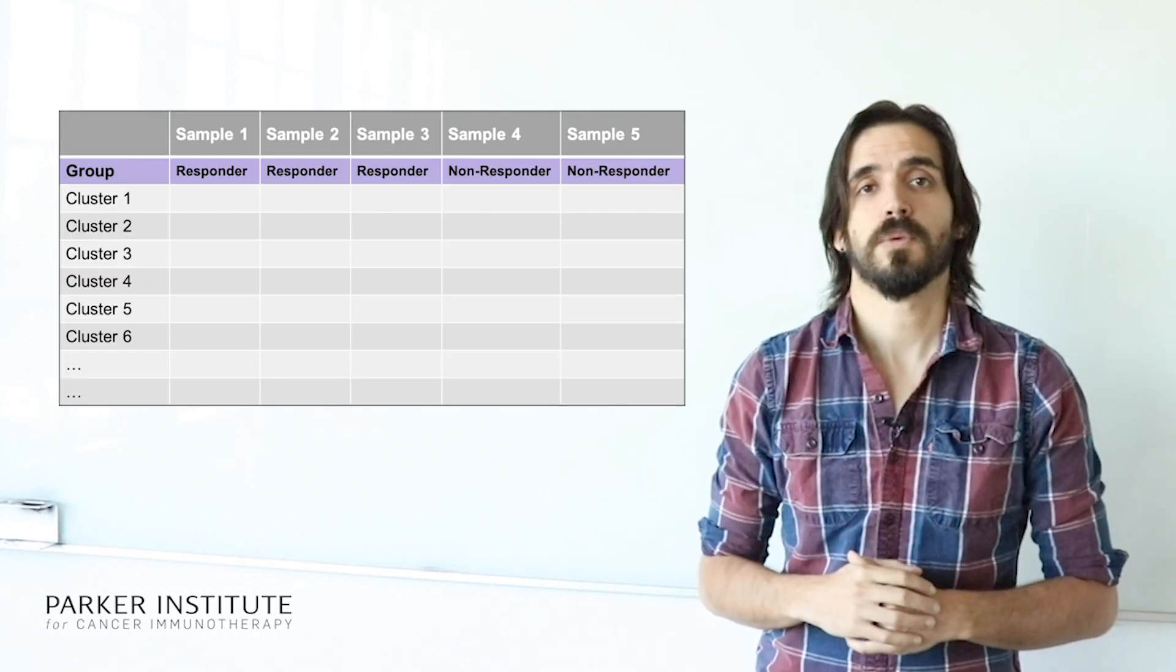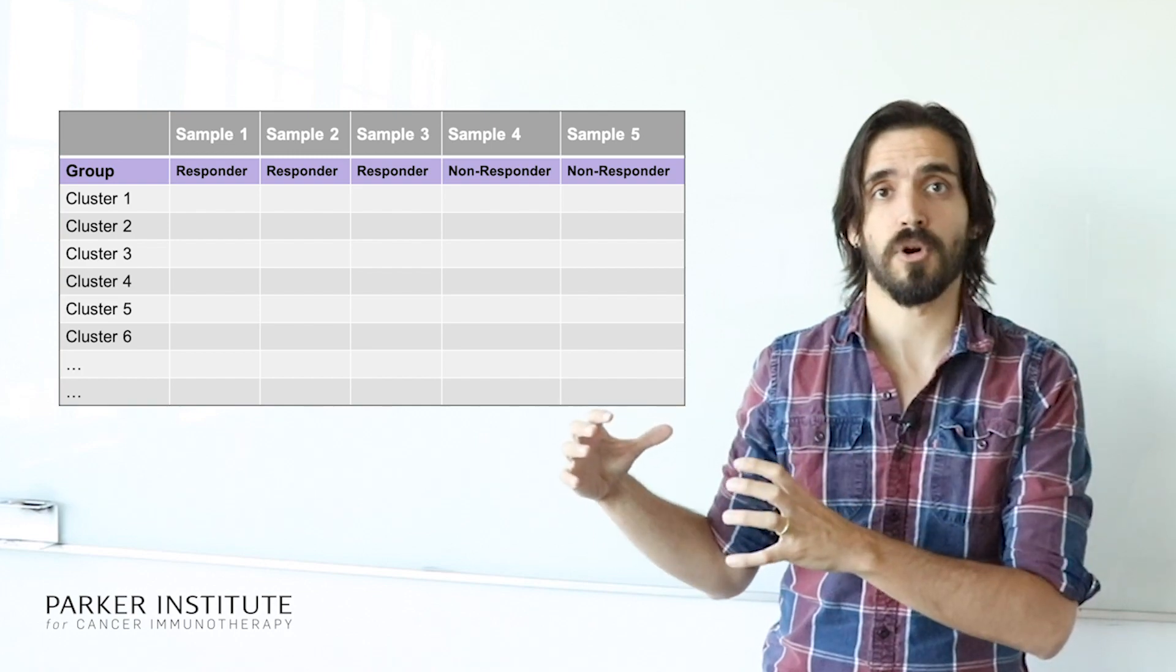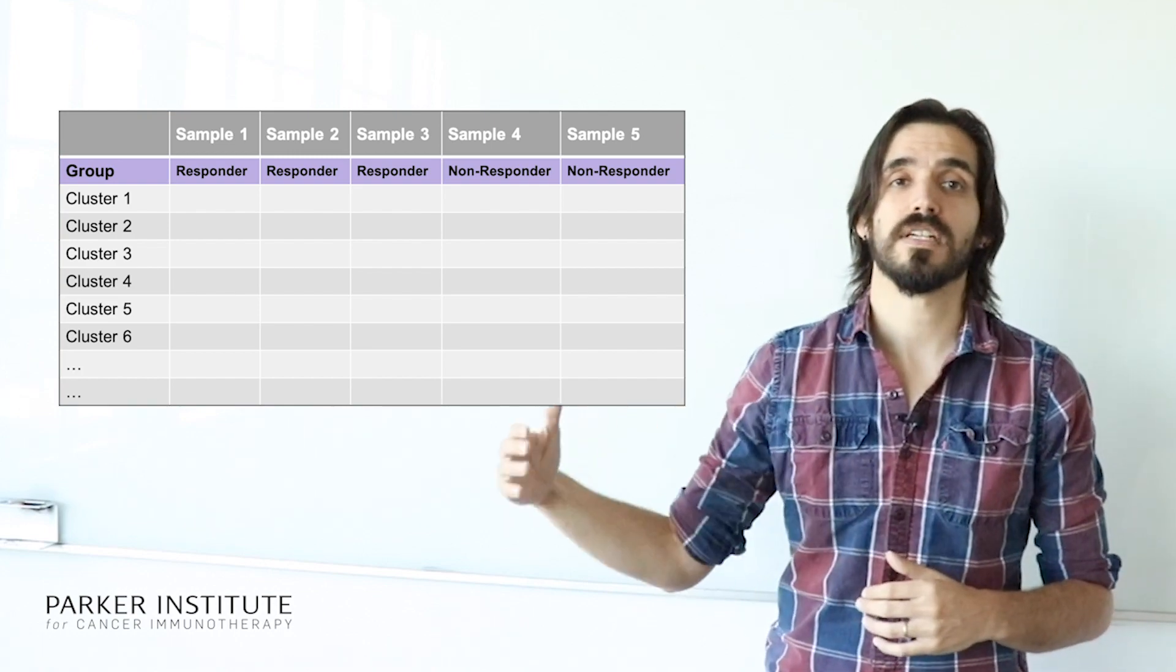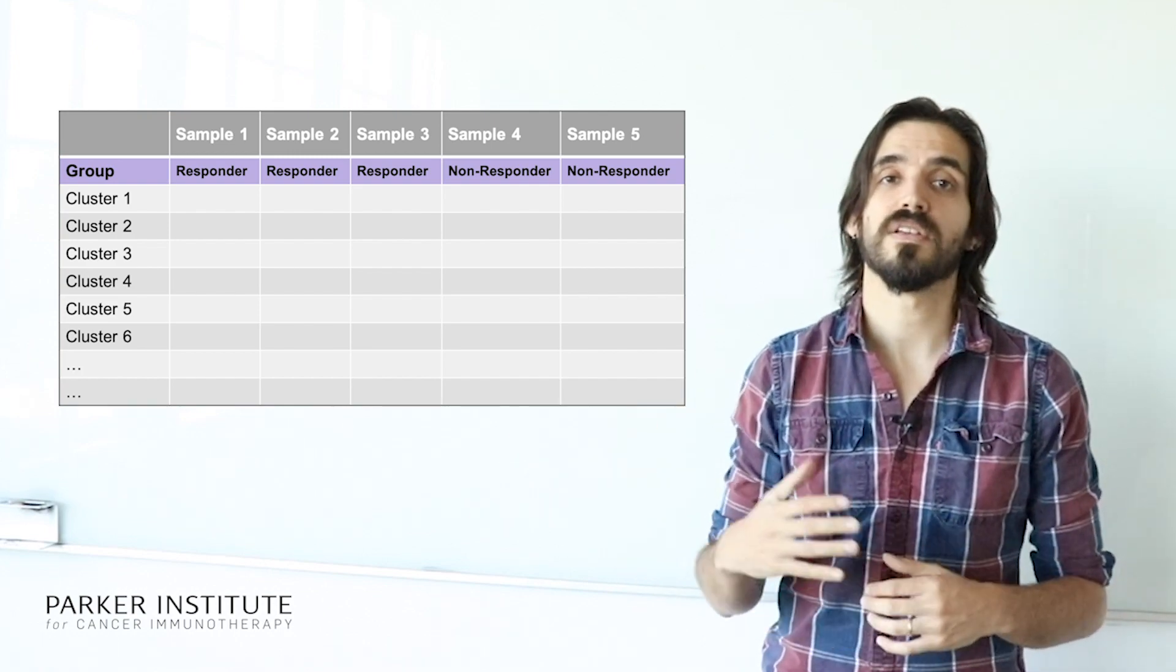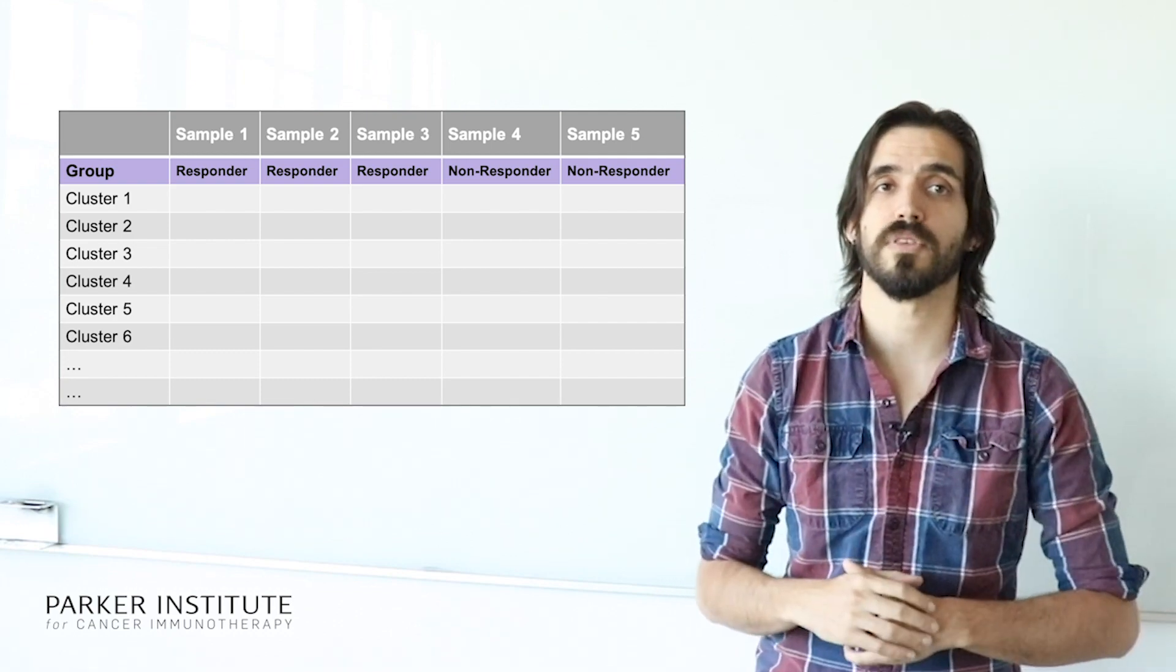Instead, if you pull all the data together, you will be able to construct the matrix that we were talking about before, and then at this point, once the data is in that form, there is a whole variety of statistical methods that you can use to identify whether any cluster is specifically up-regulated or down-regulated in responders versus non-responders.